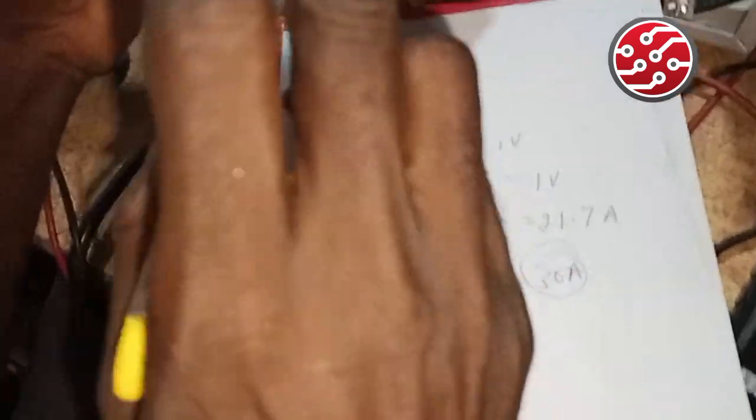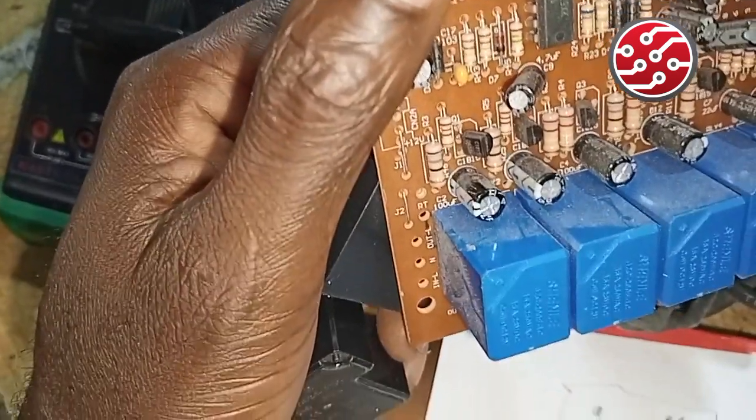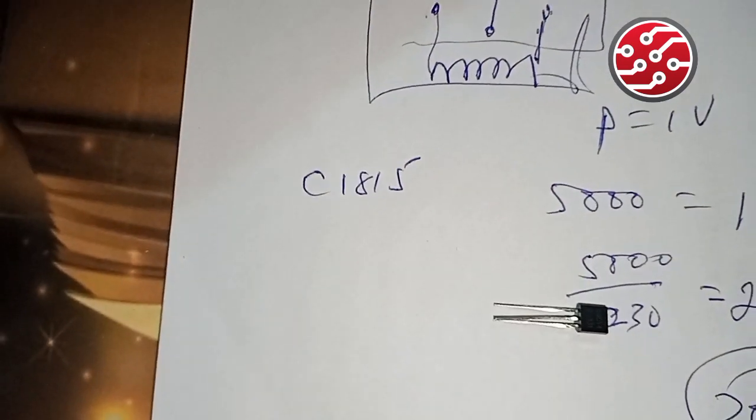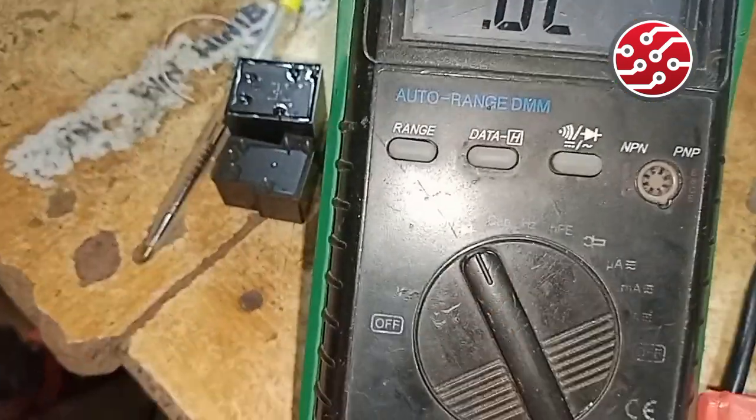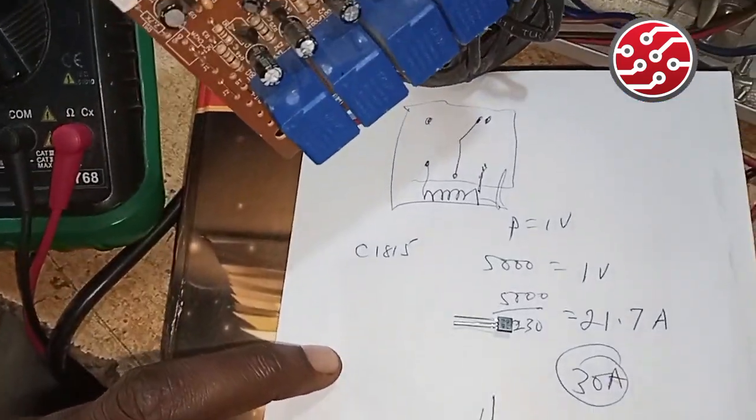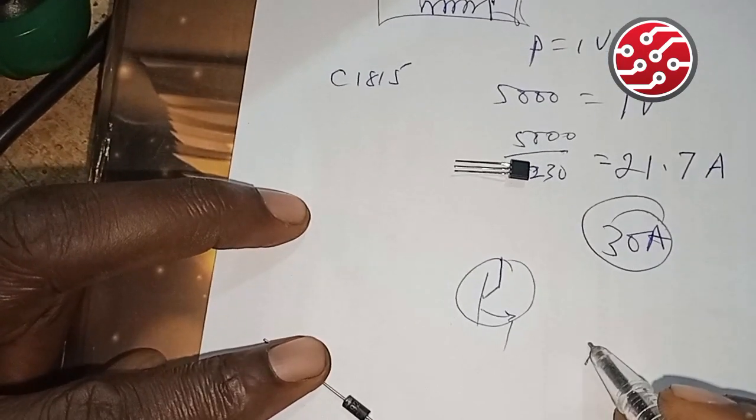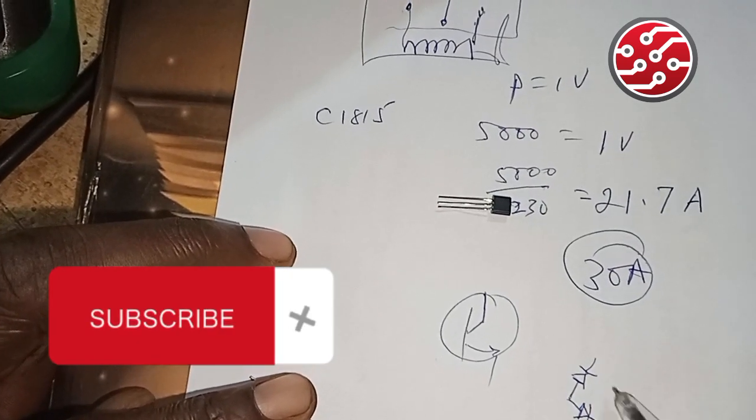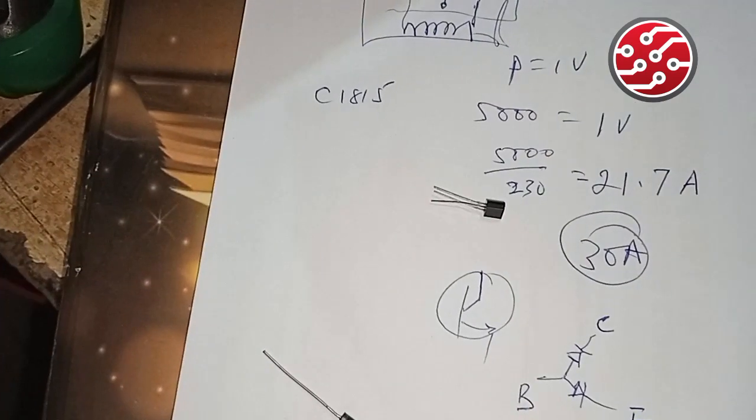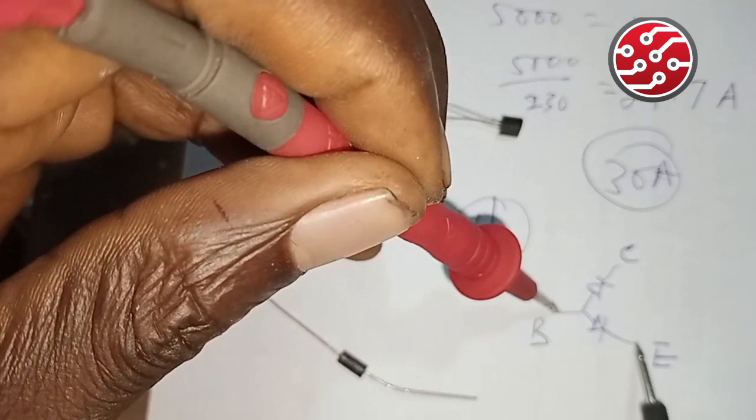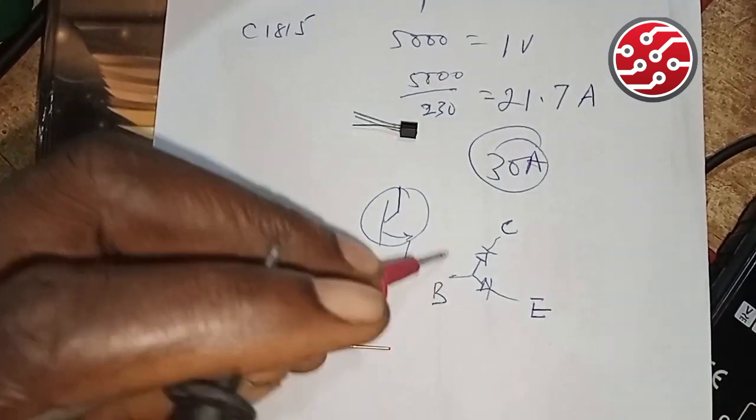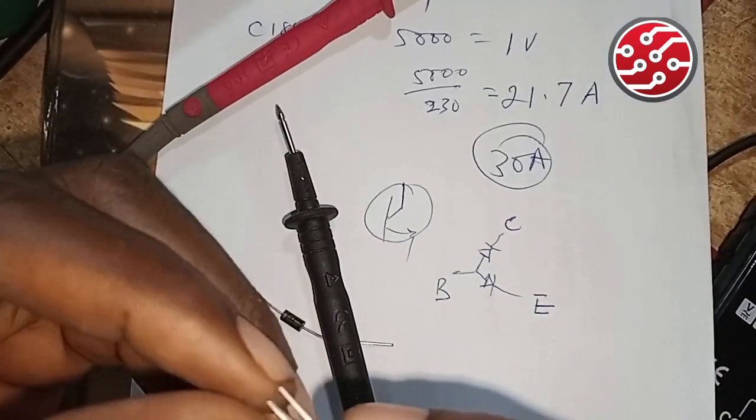The transistors - you see C1815. How do you read it with your meter? You switch your meter to diode. Transistor is made up of two diodes. Let me sketch it. Here is the base, here is the collector, here is the emitter. If you are reading it, you put your positive probe here, negative probe - it reads. You put this one here, it reads. The difference is that the doping of one is higher than the other. I have a transistor here; let me read it so you understand.